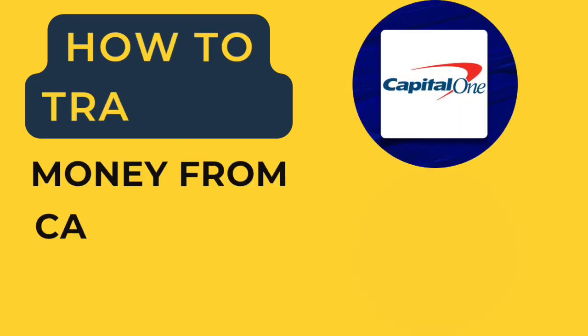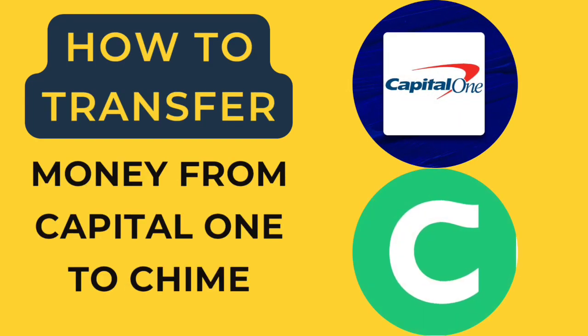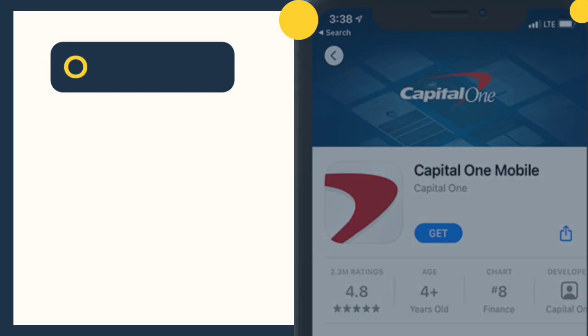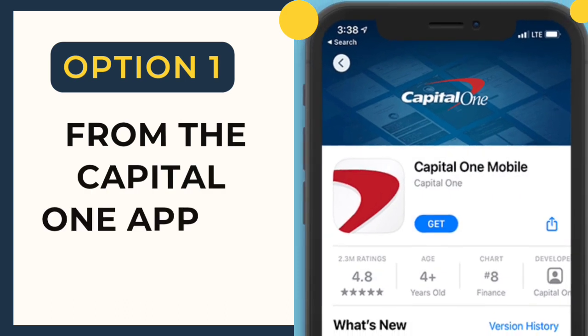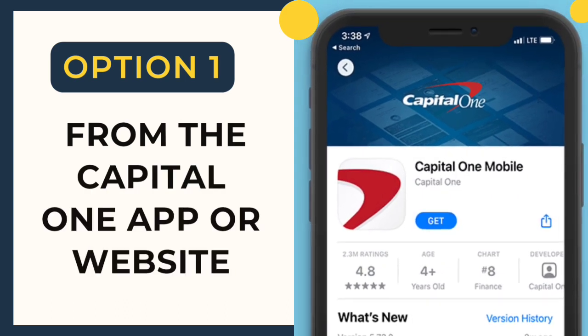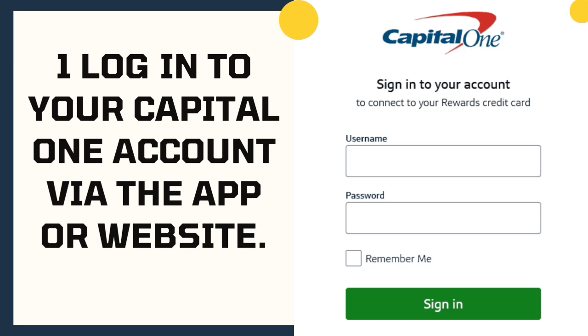How to transfer money from Capital One to QIIME. Option 1: From the Capital One app or website. Log in to your Capital One account via the app or website.